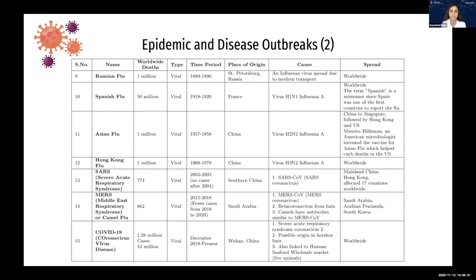The Spanish flu caused 50 million deaths in just two years — a massive scale pandemic. We then had the Asian flu, Hong Kong flu, SARS or the severe acute respiratory syndrome, and MERS or the Middle East respiratory syndrome, also known as Camel Flu. These were more concentrated to certain areas but still destructive. SARS affected 17 countries worldwide. And now, of course, we are going through COVID-19, with 52 million cases worldwide and 1.28 million deaths. It is viral in nature and spread worldwide.